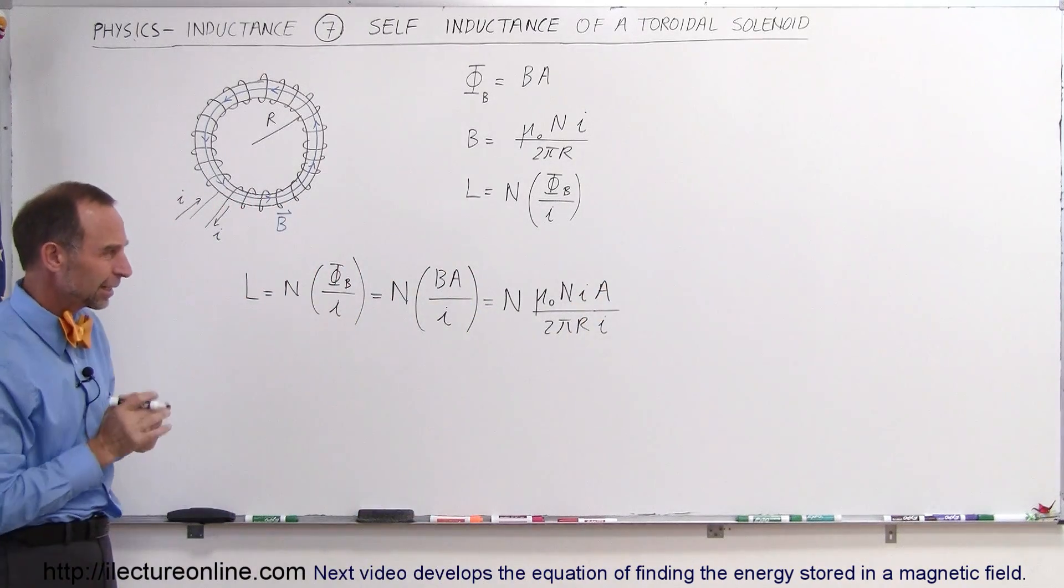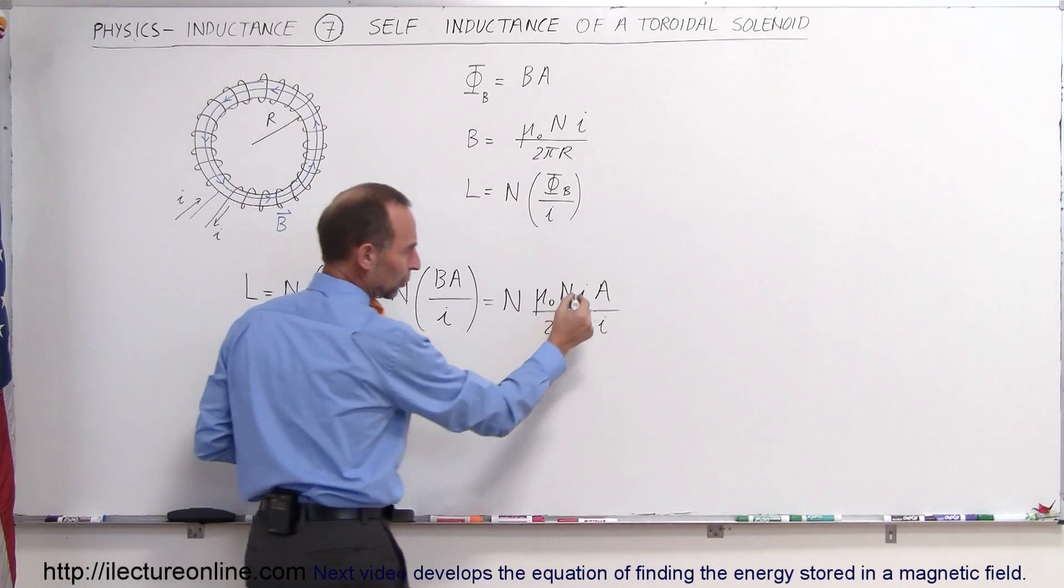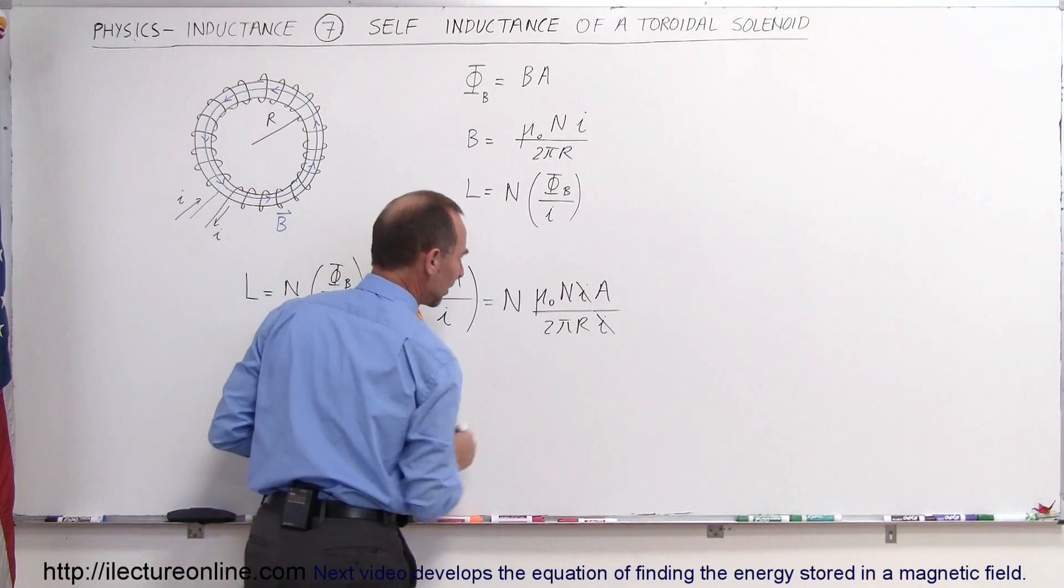So now we have the self-inductance. We need to clean it up a little bit. Notice that the current cancels out. We have N times N, which is N squared.